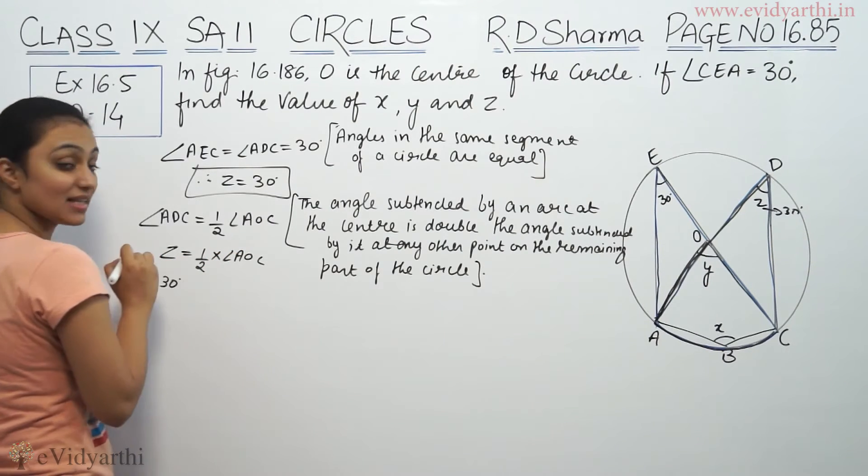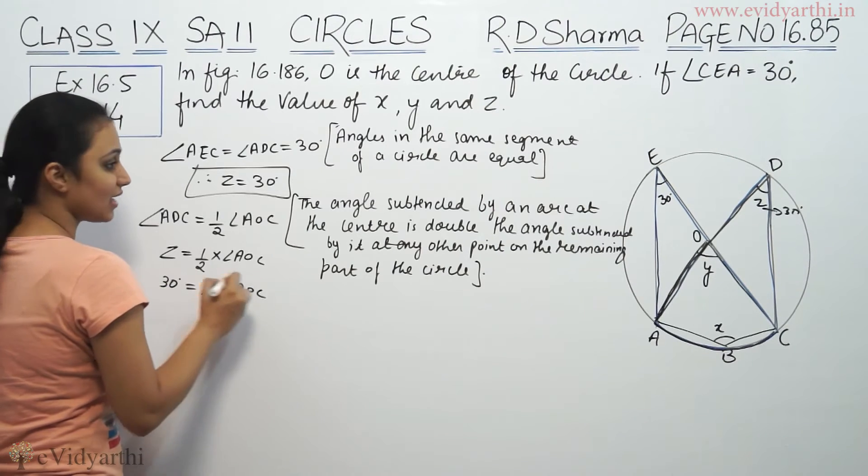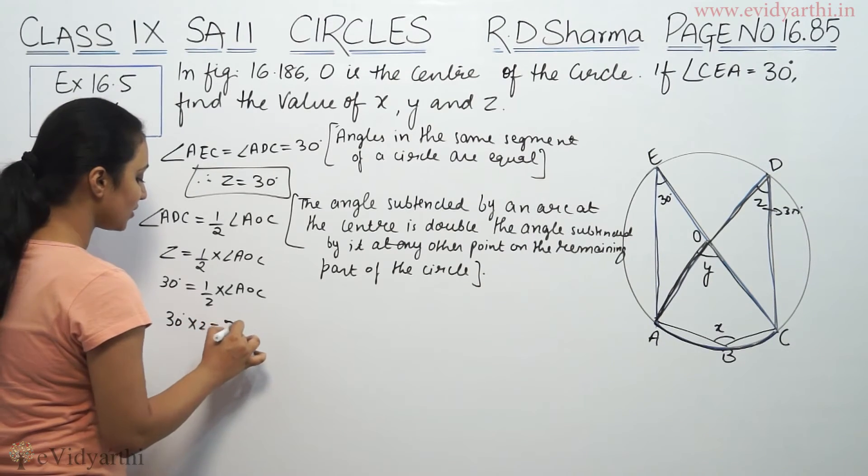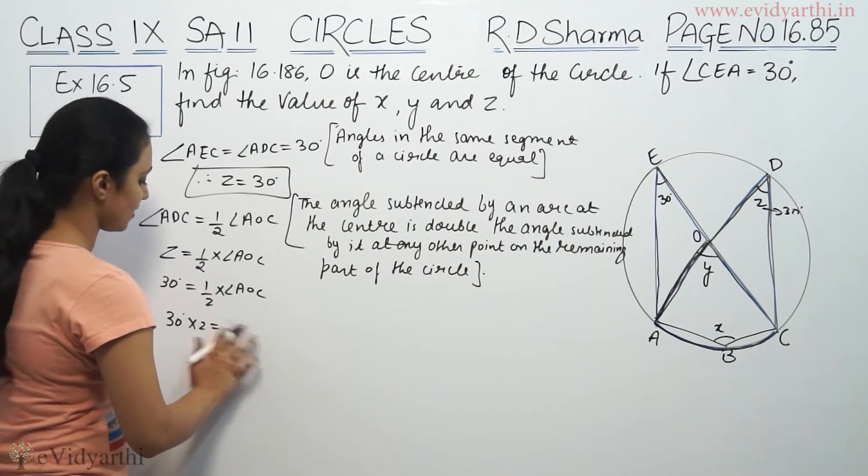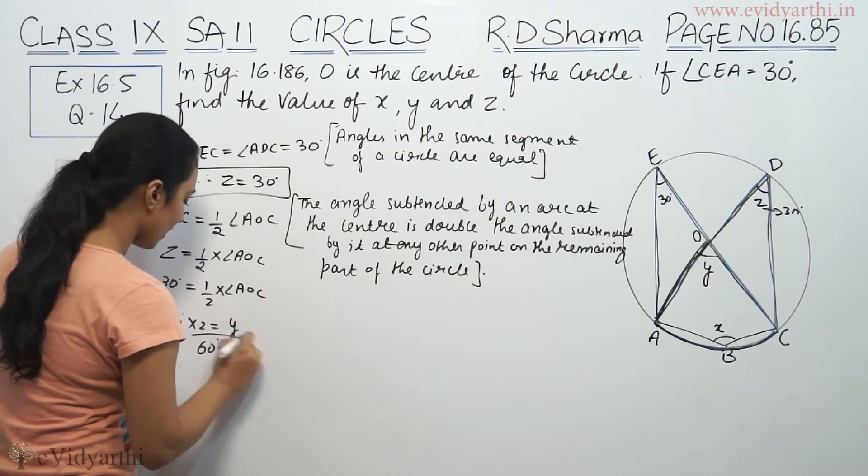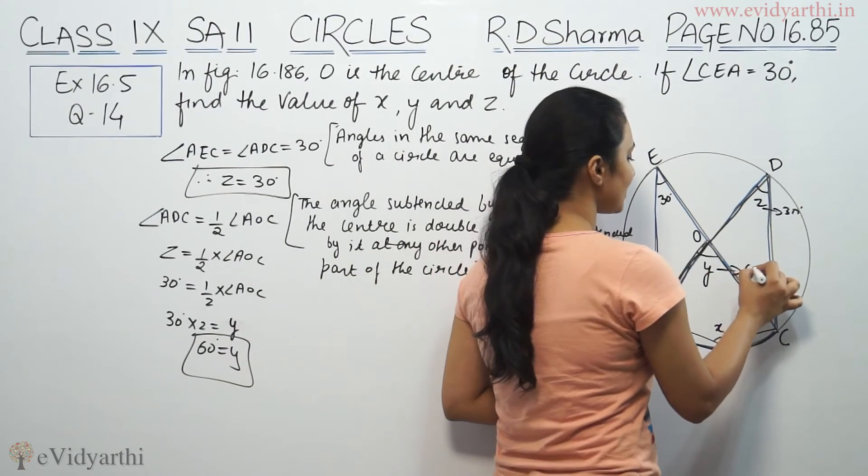Z is 30 degrees, equals half into angle AOC. AOC is Y. Multiply by 2, so 30 degrees times 2 equals AOC, which is Y. Therefore 60 degrees equals Y. So Y is 60 degrees.